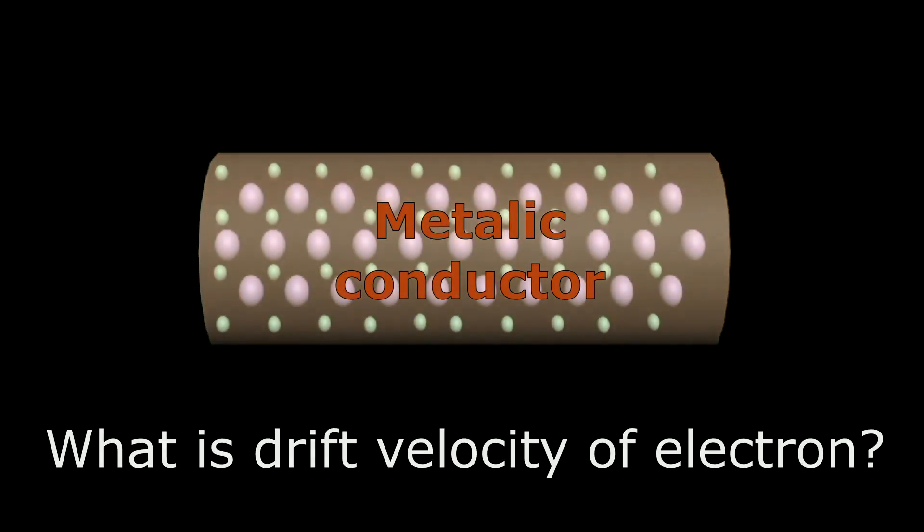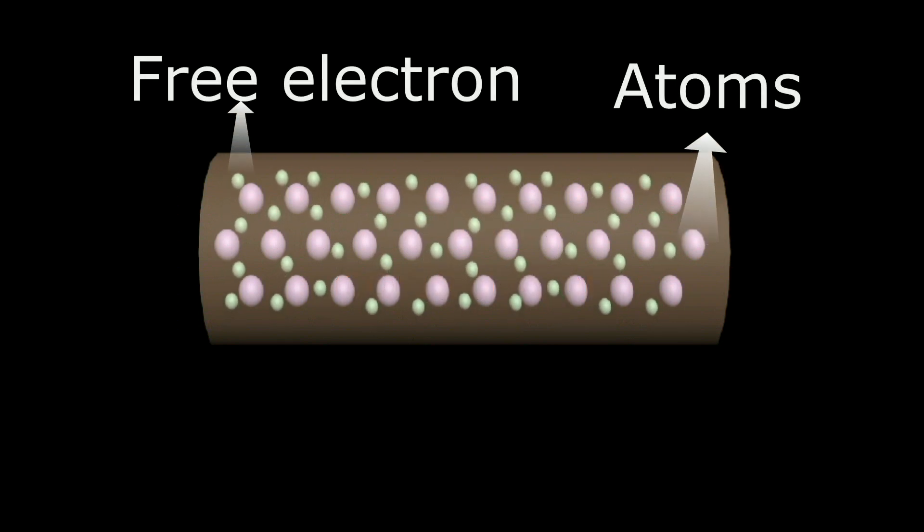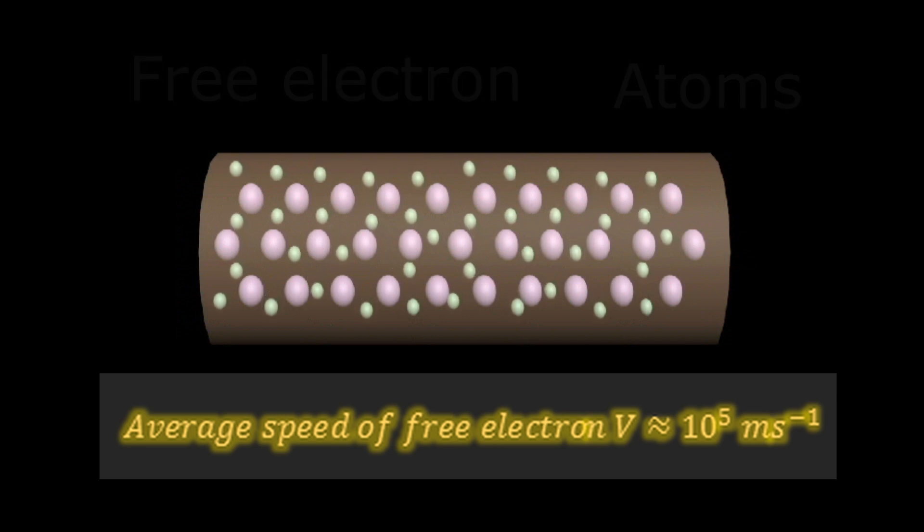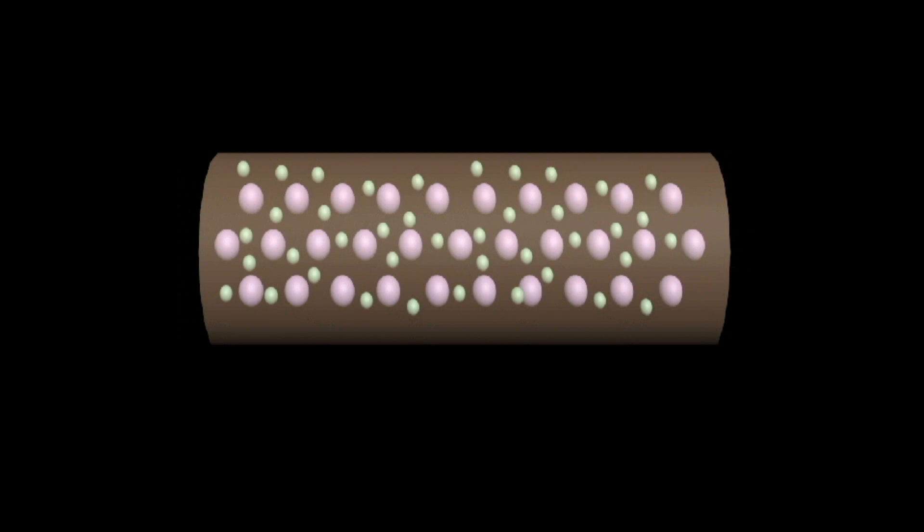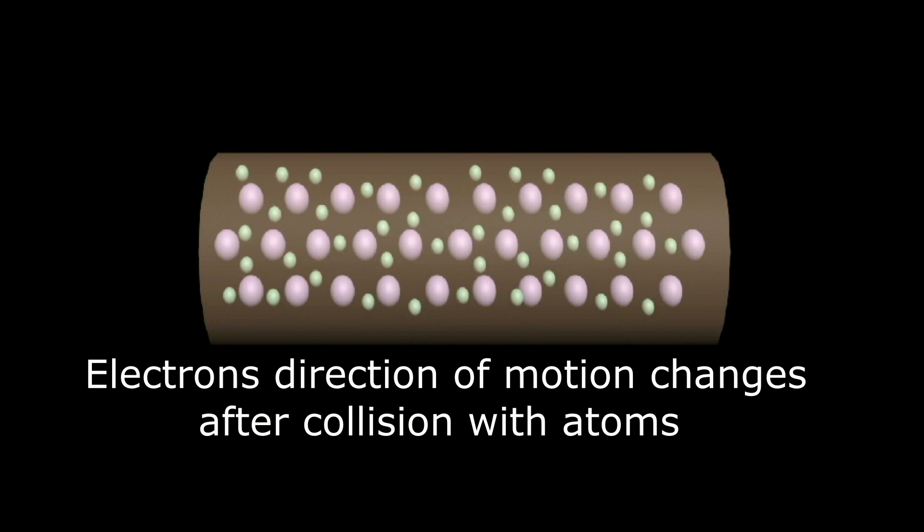Every metal has a large number of free electrons which move randomly within the body of the conductor. The average speed of free electrons is sufficiently high during random motion. The free electrons collide with the atoms of the conductor again and again, and after each collision their direction of motion changes.